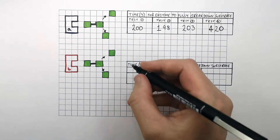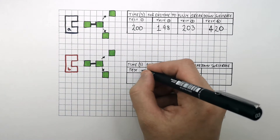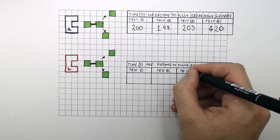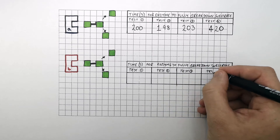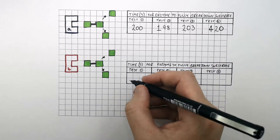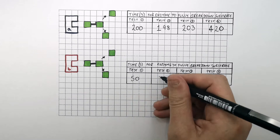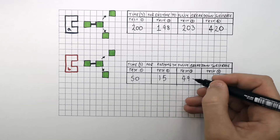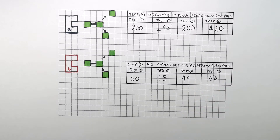So what was the time in seconds for enzyme B to fully break down the substrate into product? Again, we did the test four times. In the first test it was 50 seconds. Second test, 15 seconds. Then 49 seconds. Then 54 seconds in the final test.